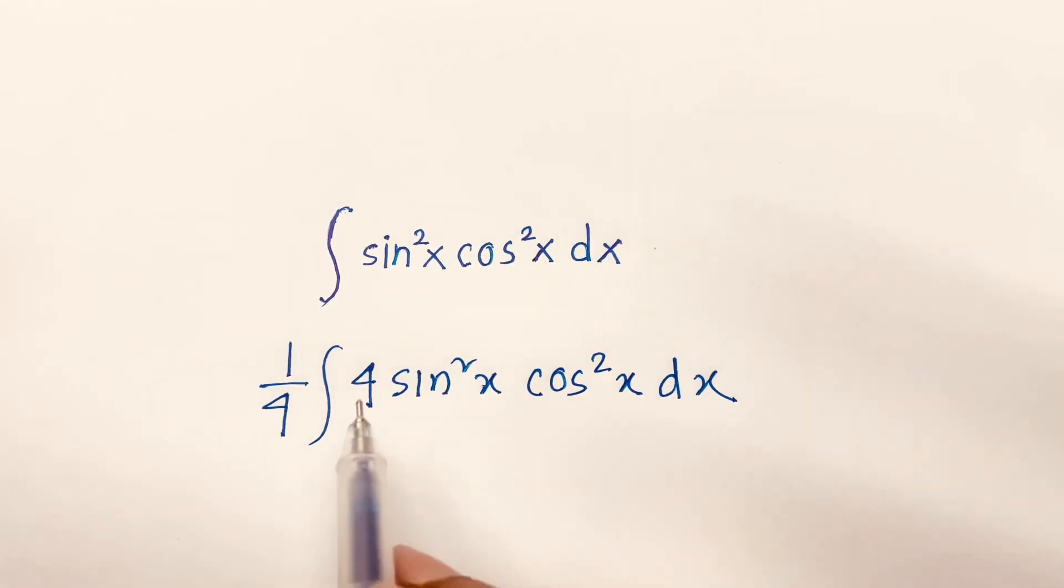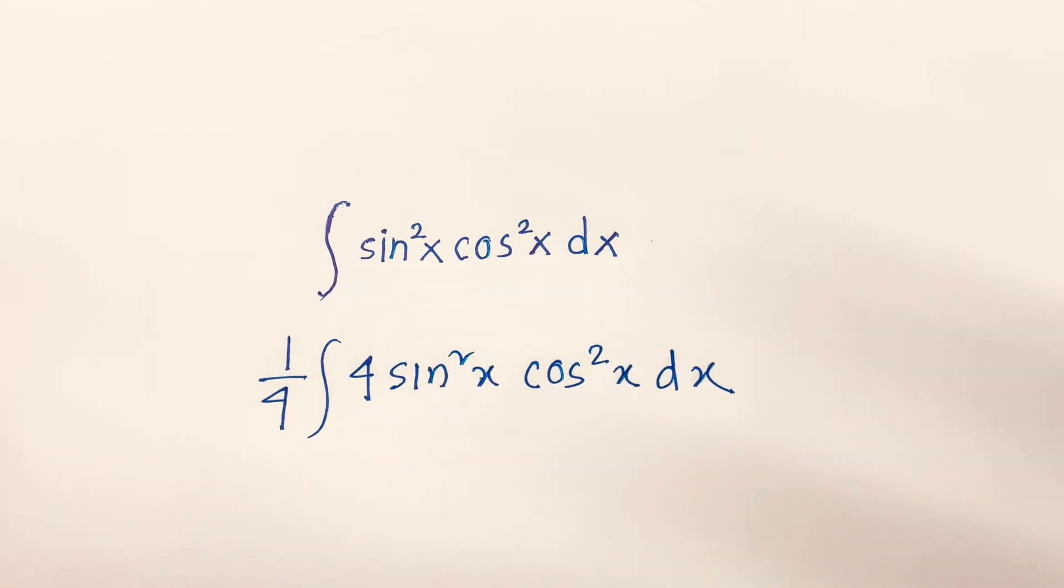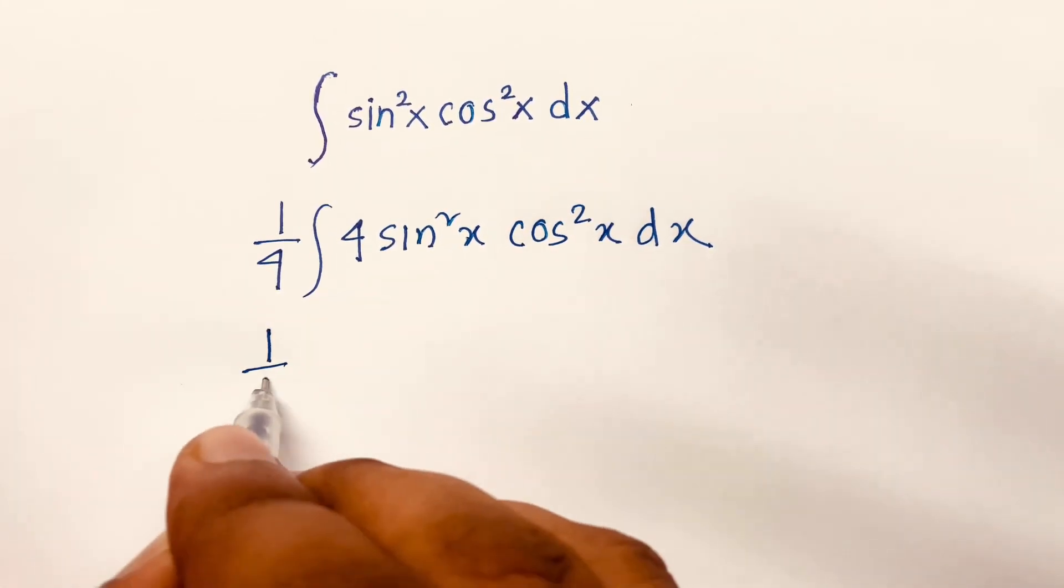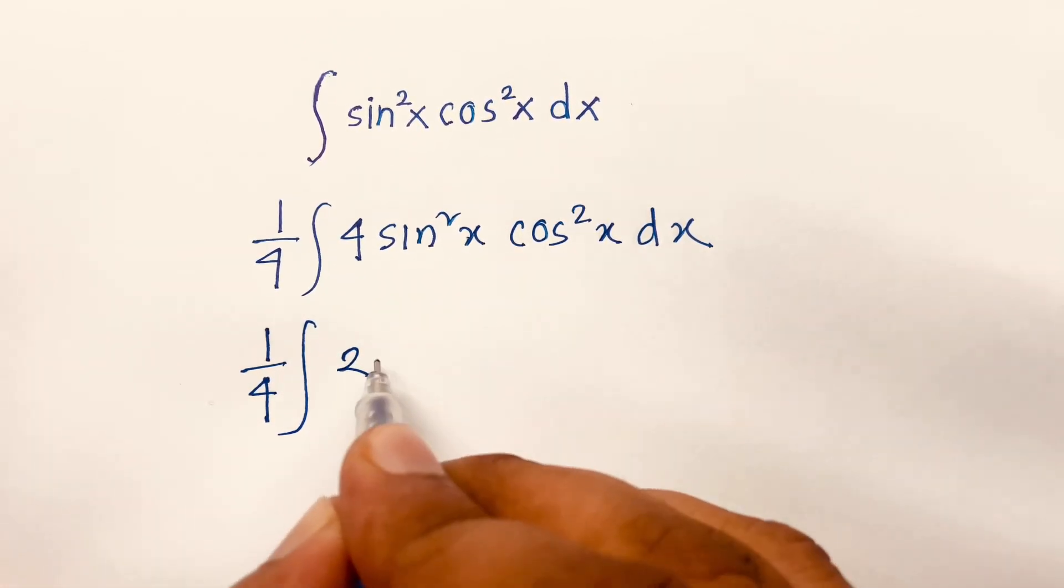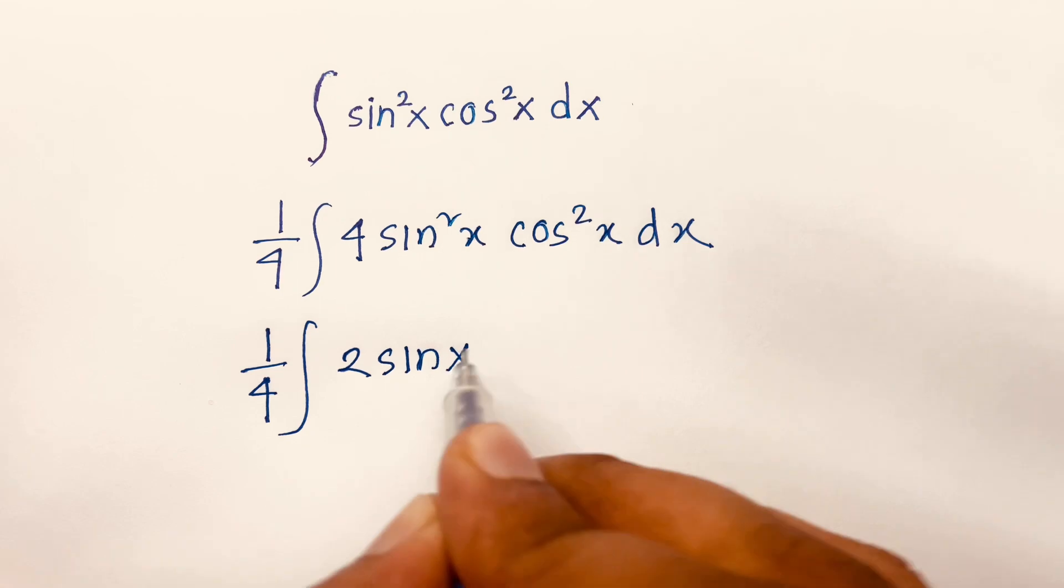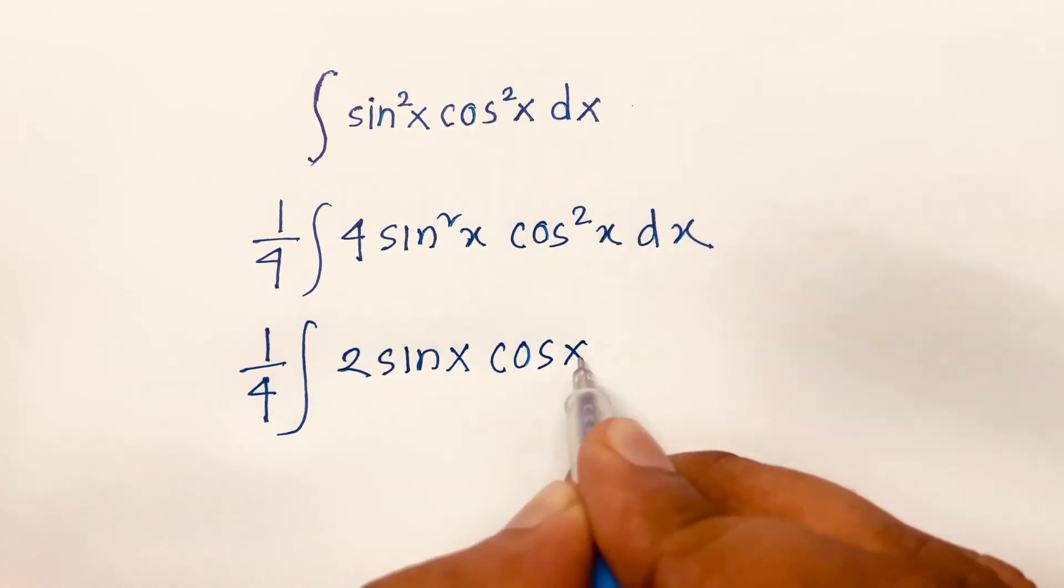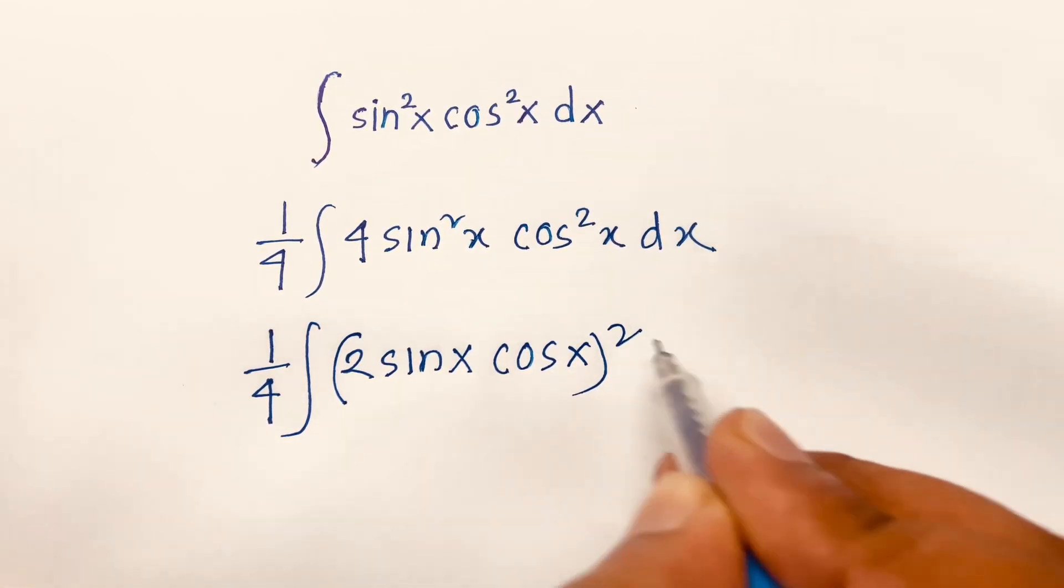Look, this 4, this 4 is cancelled. So we will find out again the previous line. Now, I can say 1 over 4 integral of, it will be 2 sine x cos x whole square dx.